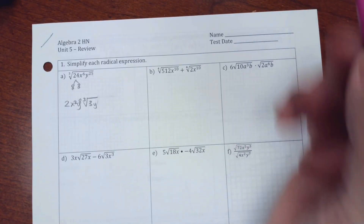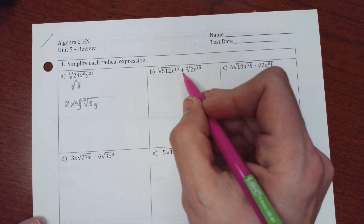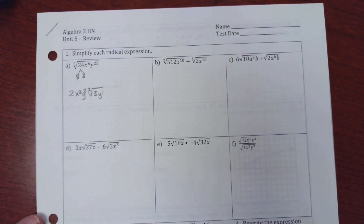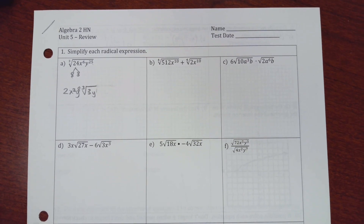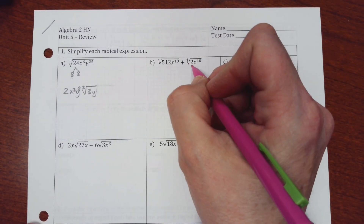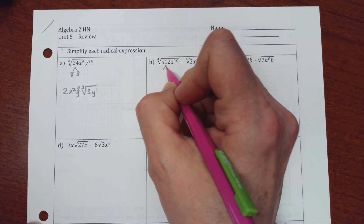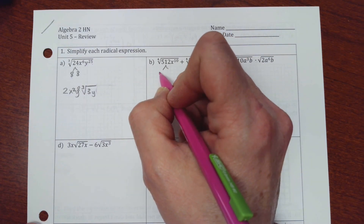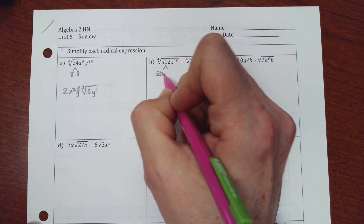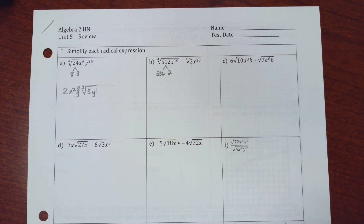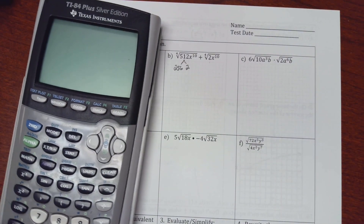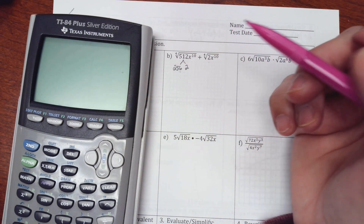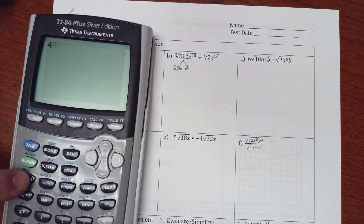For the next one: addition and subtraction are the worst because these have to look exactly alike for you to put them together. I notice over here there's a 2, and this is not going to reduce. So I'm going to see if this breaks down. 512 divided by 2 is 256 and 2. So if I try on my calculator to do the 4th root of 256, let's see if this has a perfect answer. Put a 4, press math, go down to the x root, 256.